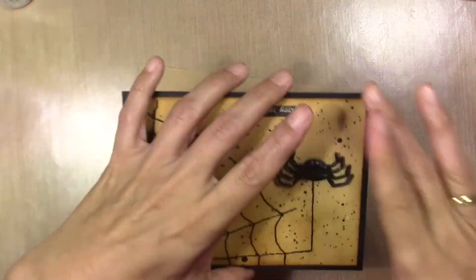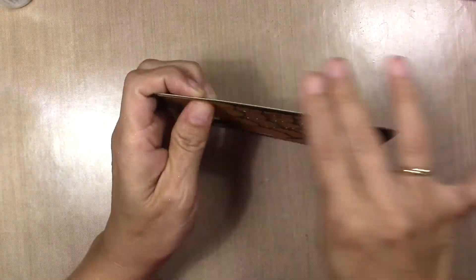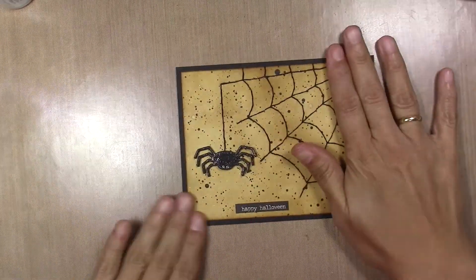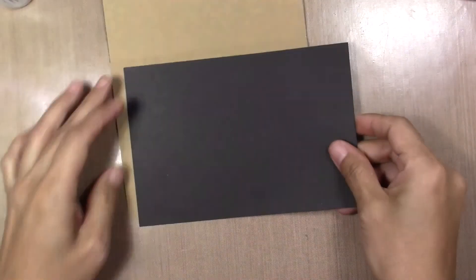After that I'm going to do the inside of my card using two sizes of different die cuts. I'm going to use black and white and then I will stamp the sentiment.